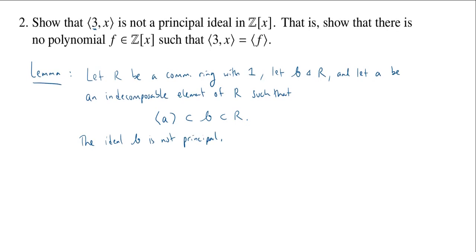So we proved this in class and we want to apply this in our situation. So first, what is our B? What is the ideal? Well, of course, it's the thing we're trying to show is not principal. Namely, the ideal generated by 3 and x. So that's going to be our B in the lemma.